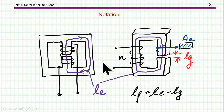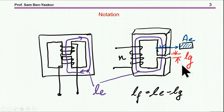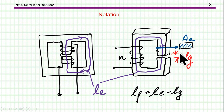Let me start with some notation. L sub E is the magnetic path length within the ferrite — here it is sort of folded, as this is an E core folded back to back. L sub G is the length of the air gap, while A sub E is the cross-section area of the core. L sub F is the magnetic path length of the ferrite itself, which is the total length minus the length of the air gap.